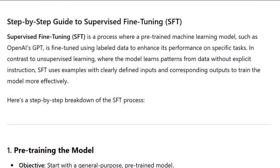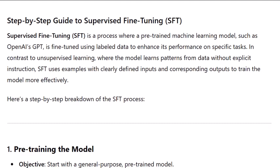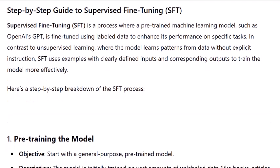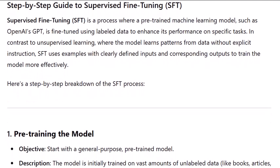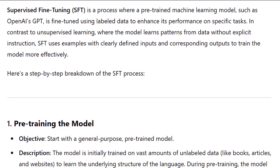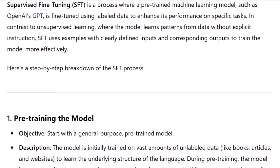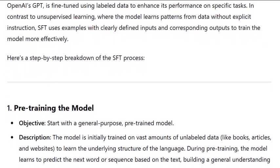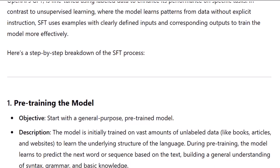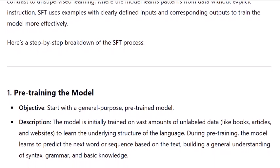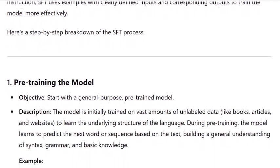Supervised fine-tuning, or SFT, is a process where a pre-trained machine learning model, such as OpenAI's GPT, is fine-tuned using labeled data to enhance its performance on specific tasks. In contrast to unsupervised learning, where the model learns patterns from data without explicit instruction, SFT uses examples with clearly defined inputs and corresponding outputs to train the model more effectively.